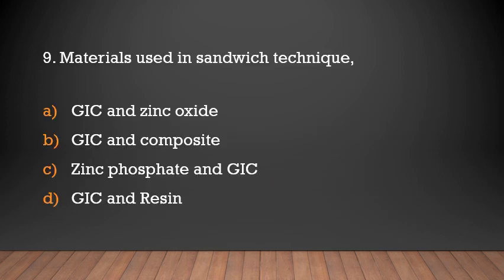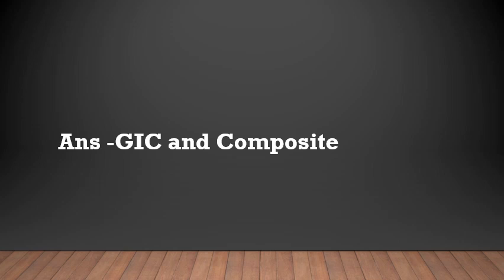Materials used in the sandwich technique: (a) GIC and zinc oxide, (b) GIC and composite, (c) zinc phosphate and GIC, (d) GIC and rosin. Answer: GIC and composite.